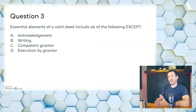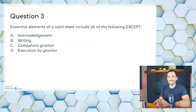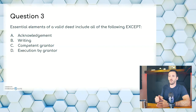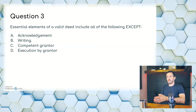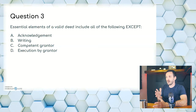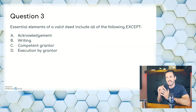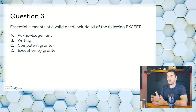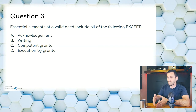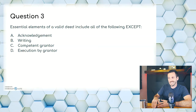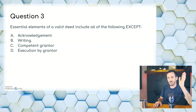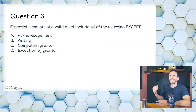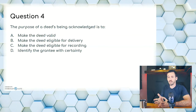Question three: essential elements of a valid deed include all of the following except — A, acknowledgement; B, writing; C, competent grantor; or D, execution by grantor. A deed is a written instrument. It needs a competent grantor, identity of the grantee, words of conveyance, adequate land description, consideration, signature of grantor, execution, witnesses, and delivery. The tricky part is that a deed should be acknowledged and recorded to give public notice, but it is still a valid deed without acknowledgement. So the answer is A.